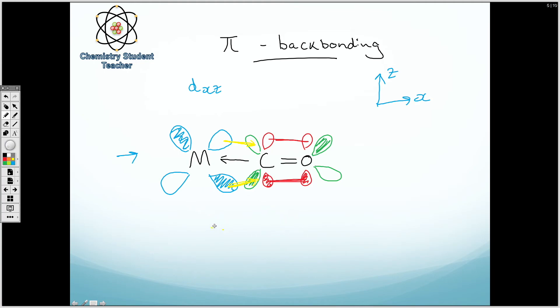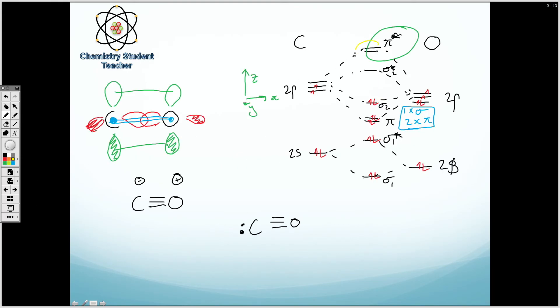It's strictly going from the metal to the carbonyl antibonding orbital. Because once again, if we flick back to that molecular orbital diagram, you can see these are empty, right? It can only accept electron density.